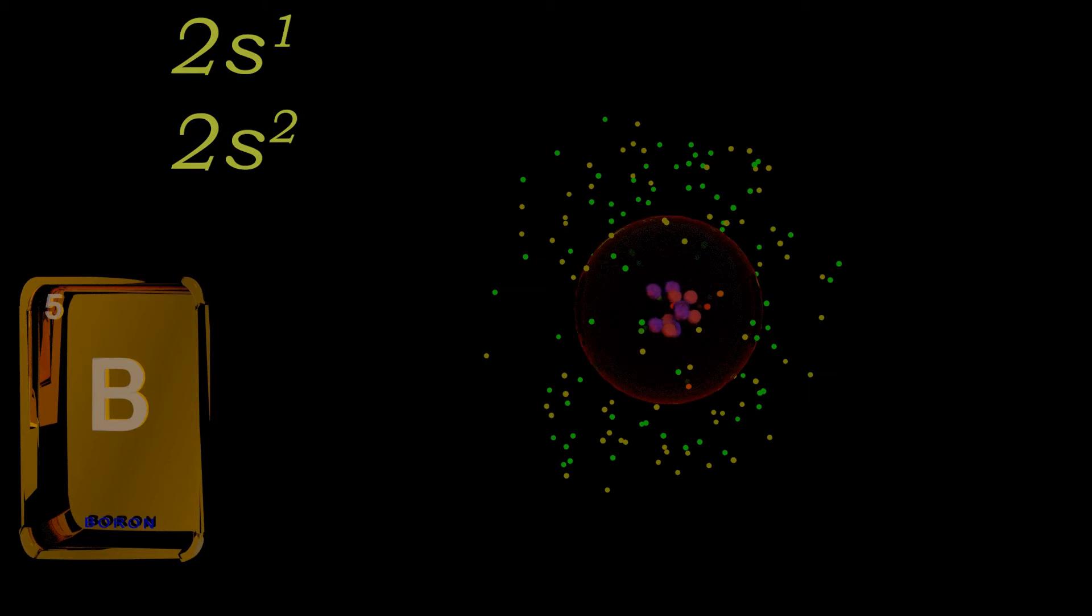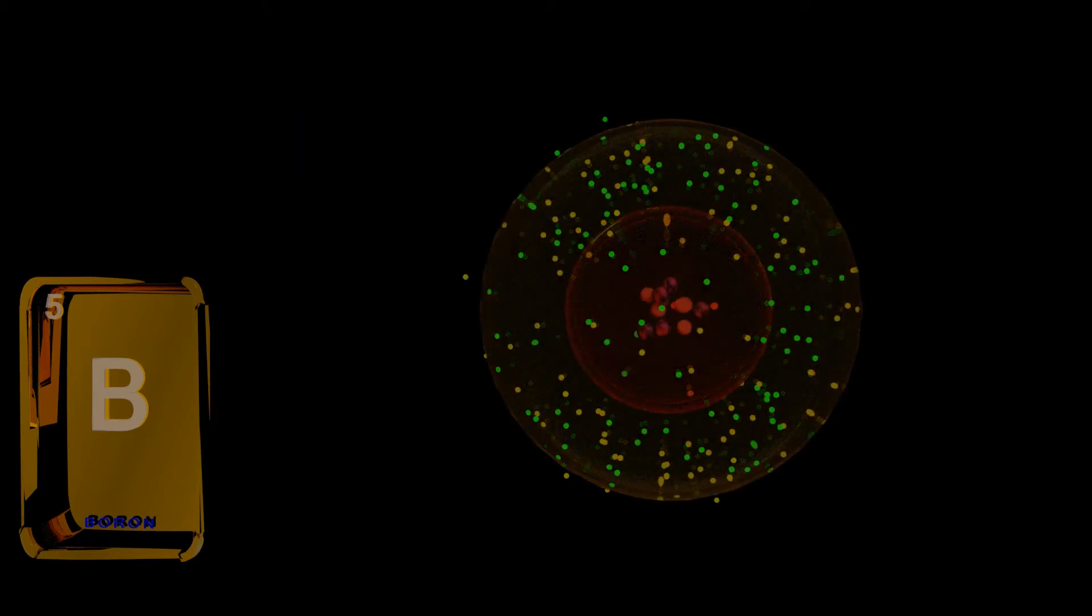The second, or 2s orbital, takes the third and fourth electron, and that spherical shell is full. Till now, we've only talked about the first quantum number, n, the principal energy level, which describes the size of the orbital.